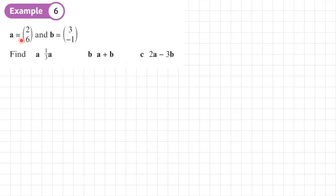Example 6. A equals column vector 2, 6. B equals column vector 3, negative 1. So in part A, we need to find one third of A, one third of vector A. That means one third of 2, 6. So the way that we do that is we just find one third of both of those numbers. So a third of 2 is going to be two thirds and a third of 6 is going to be 2. So that just gives me the column vector two thirds, 2.